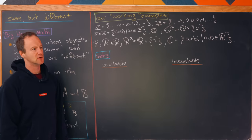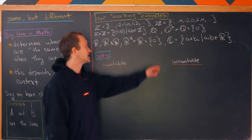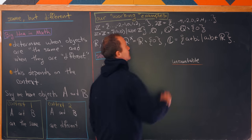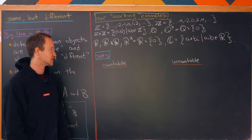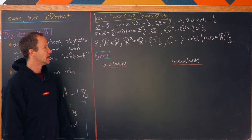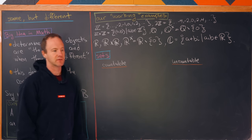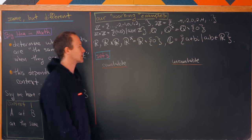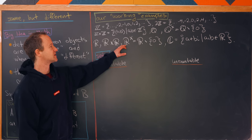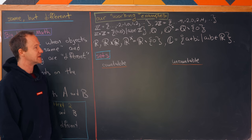The working examples we'll look at today are: the integers Z (all positive and negative whole numbers together with zero); 2Z (all even integers: …−4, −2, 0, 2, 4, …); Z×Z (all ordered pairs of integers); the rational numbers Q; the non-zero rationals Q*; the real numbers R; R×R (two-dimensional real numbers); the non-zero reals R*; and finally the complex numbers C.